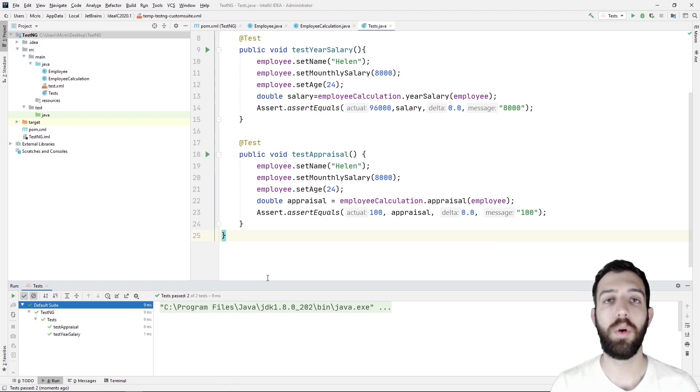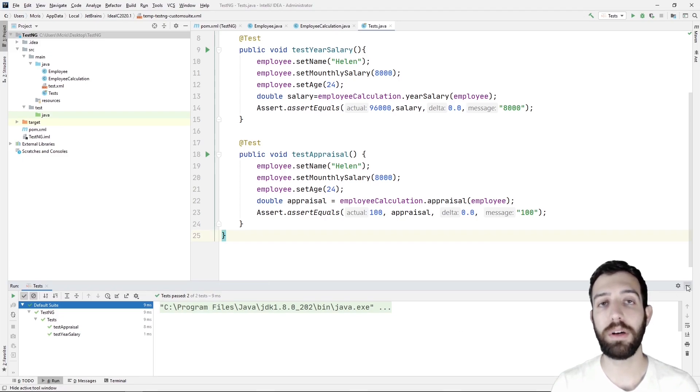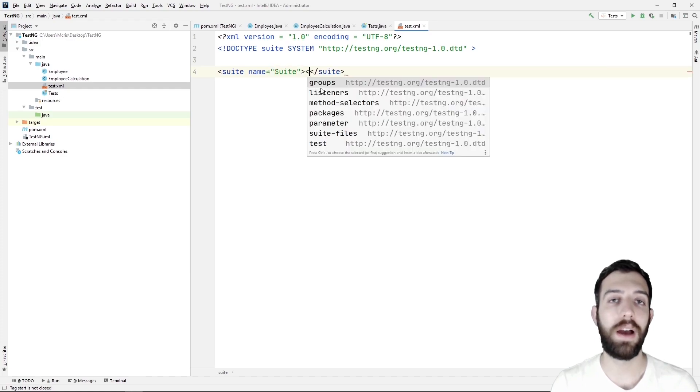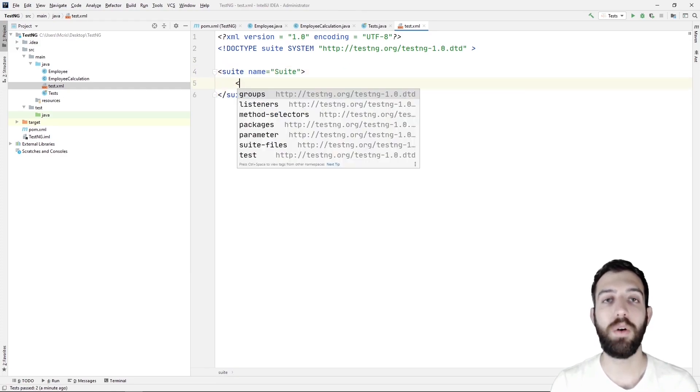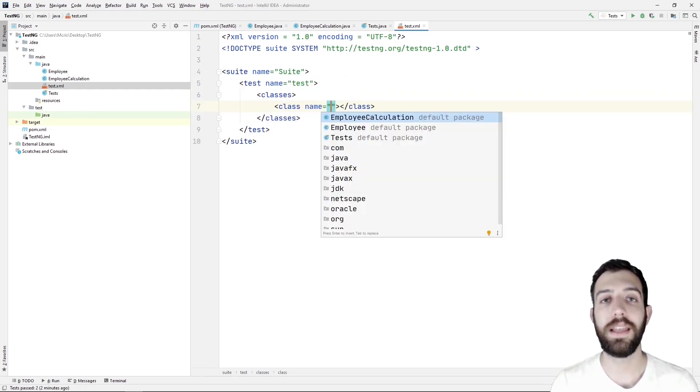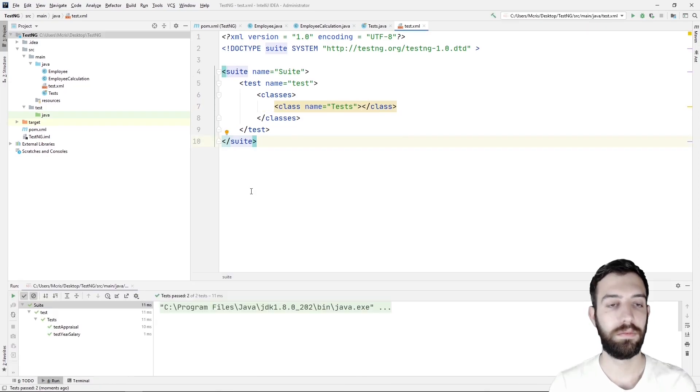Now we need to create a new XML file to be able to run the program from there. So we need to create a new XML file with a name test and we must configure it. A suite is represented by one XML file. It can contain one or more tests and we define them by the tag of suite. The test tag represents one test and the class tag represents the test class. Now we need to run the program from the XML file. As you can see, the methods have passed the test.